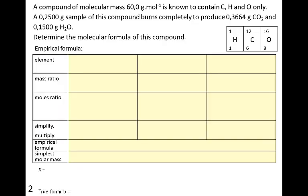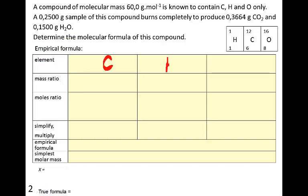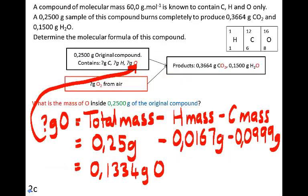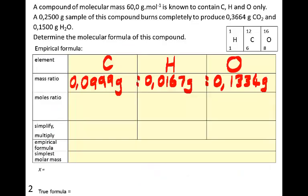We now know the mass ratio of the original compound, so we can work out the empirical formula first, then get the true formula. Our elements are carbon, hydrogen, and oxygen, with a mass ratio of 0.0999 grams of carbon, 0.0167 grams of hydrogen, and 0.1334 grams of oxygen. Next we need to convert that mass ratio into a mole ratio.